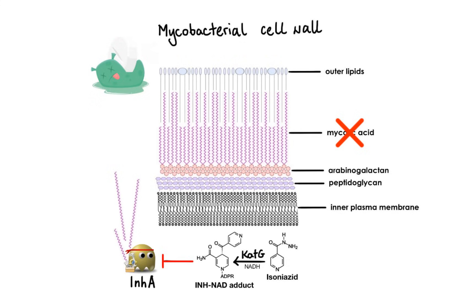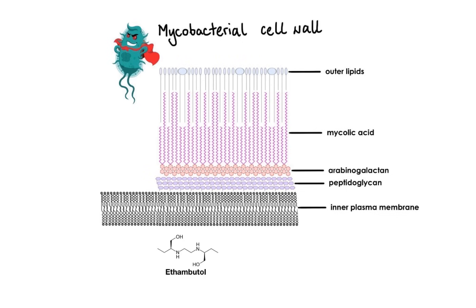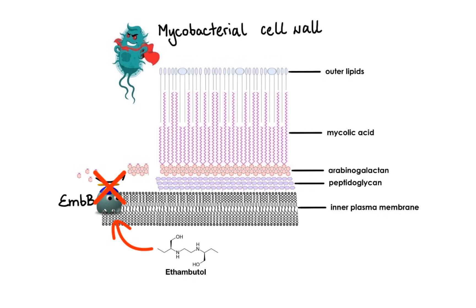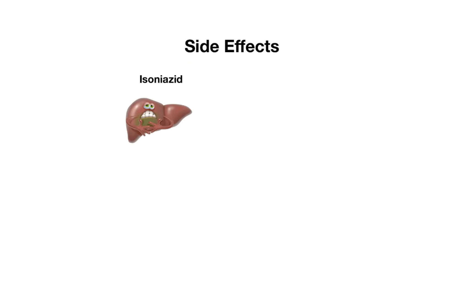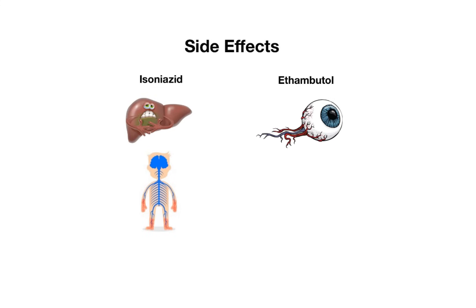The primary mode of action of ethambutol appears to be the inhibition of the membrane-associated enzyme arabinosyltransferase EmbB, which mediates polymerization of arabinose into arabinogalactan — an essential component of the mycobacterial cell wall. As a result of this enzyme inhibition, cell wall permeability increases, allowing toxic substances to enter the cell. Regarding major side effects, isoniazid may cause hepatotoxicity and peripheral neuropathy, while ethambutol may cause optic neuritis that can lead to vision loss.